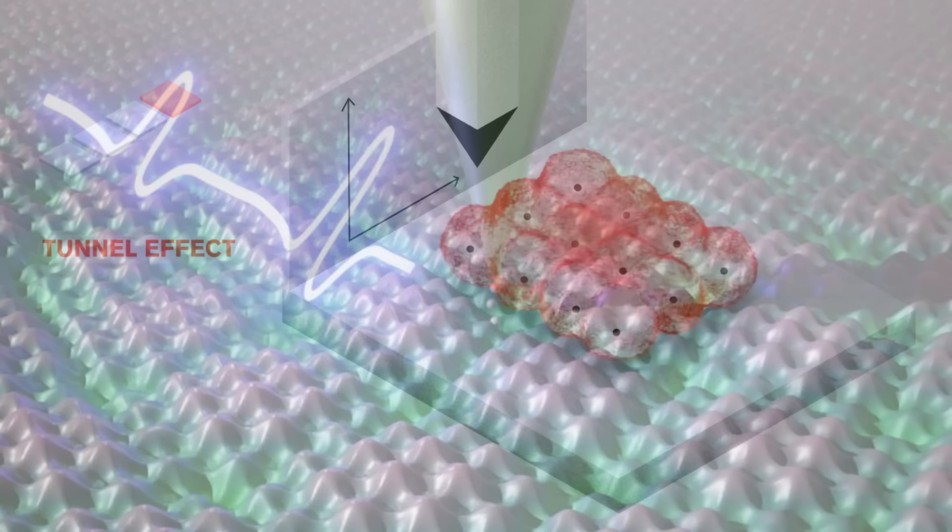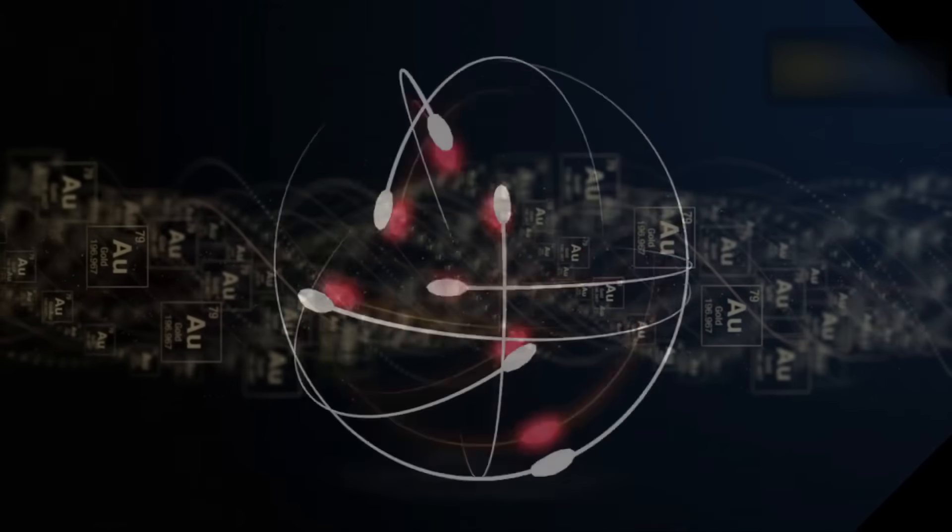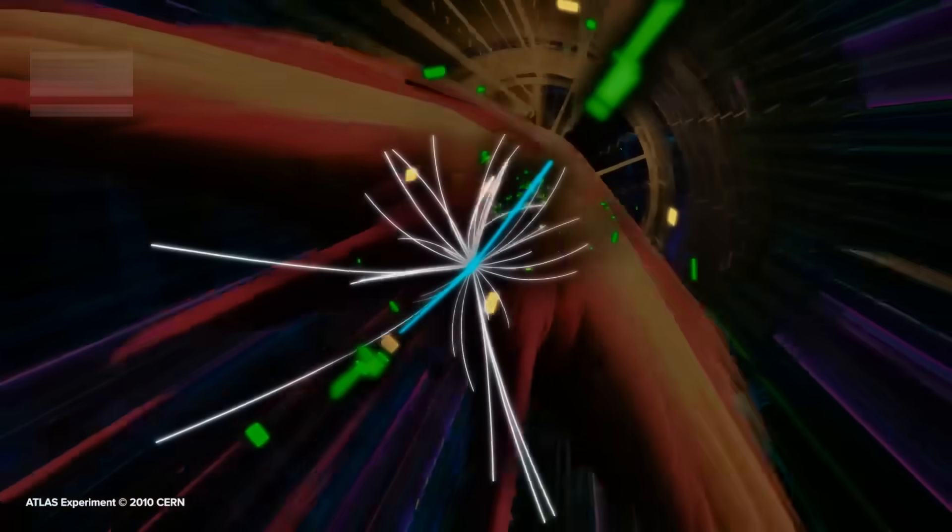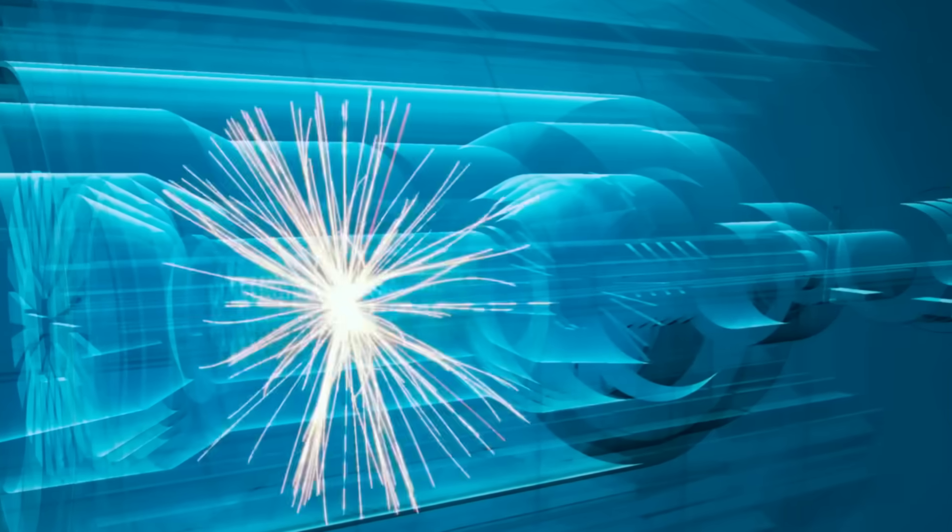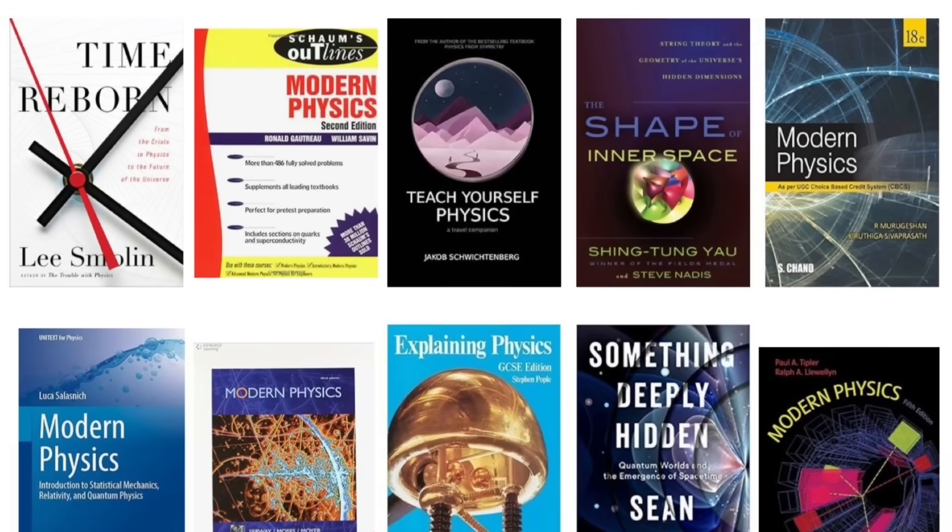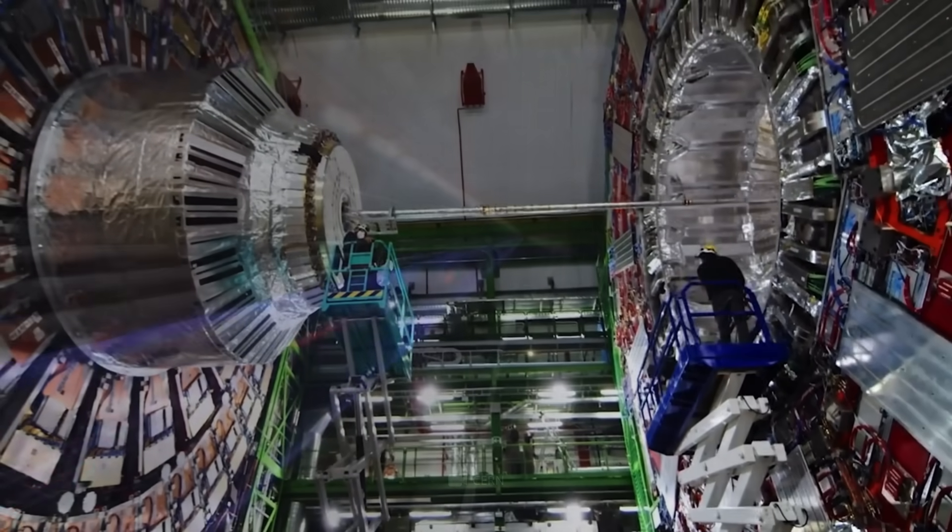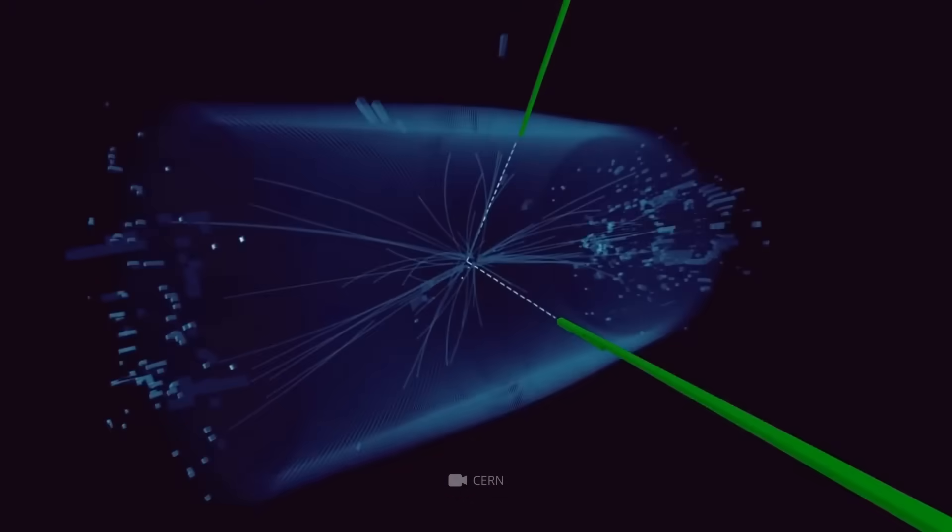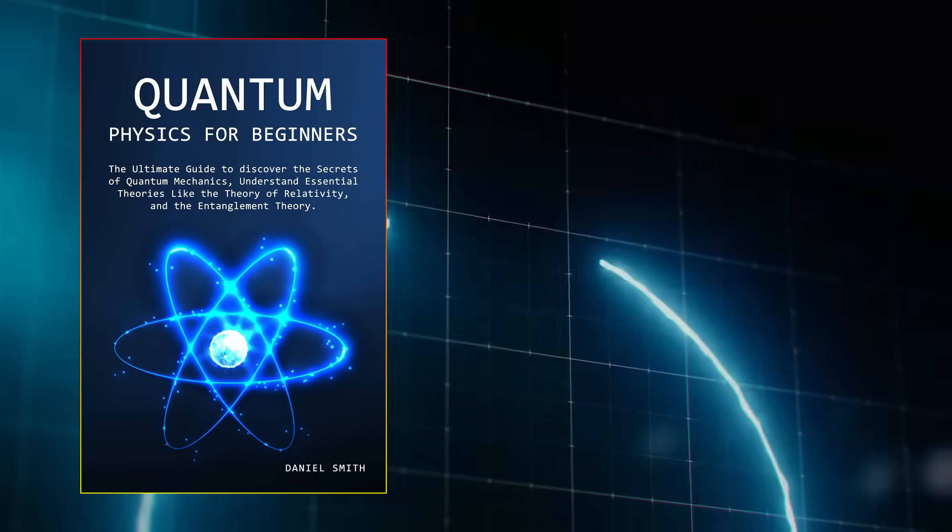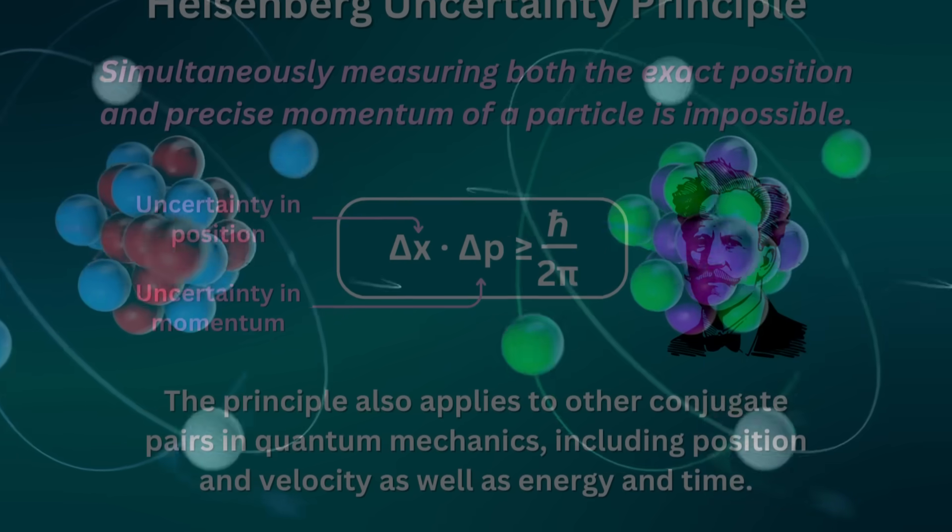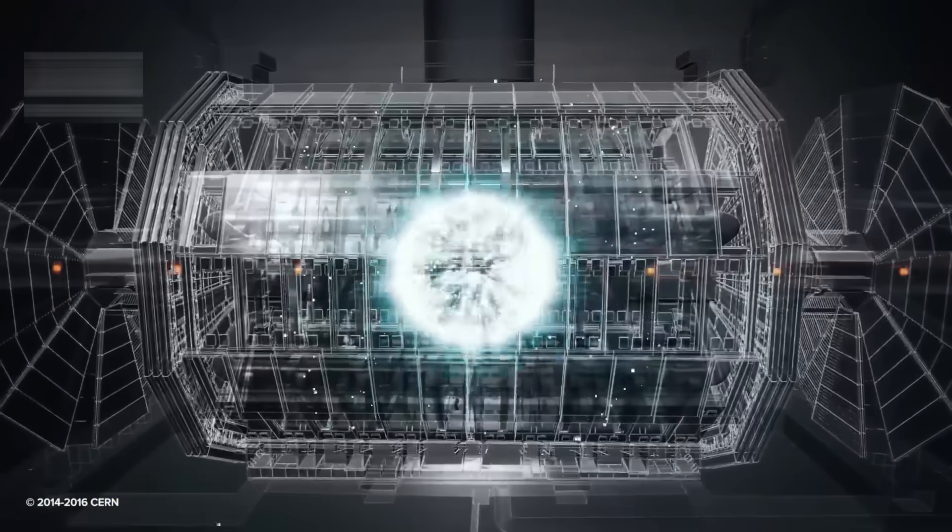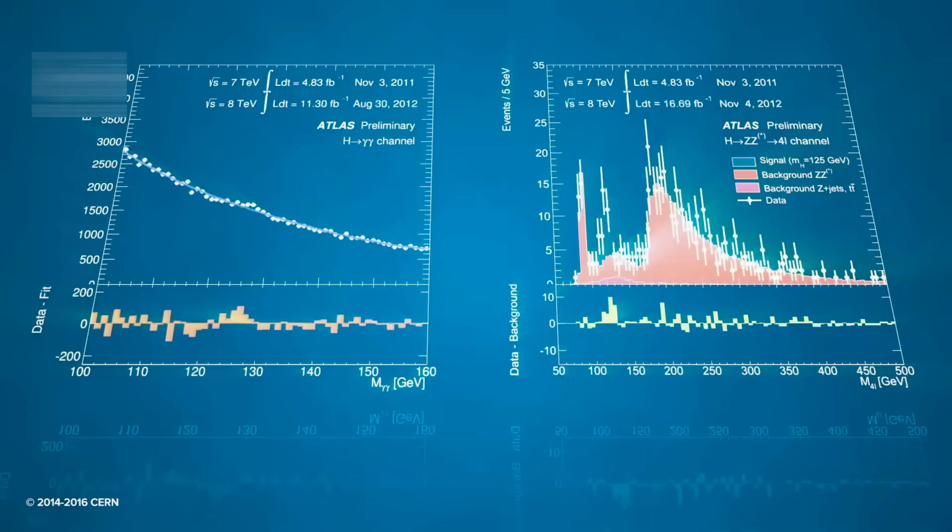CERN's achievement in demonstrating quantum tunneling at unprecedented scales opens new avenues for exploration at the boundary between quantum and classical physics, a mysterious border that has puzzled scientists since the early days of quantum theory. The timeline for further developments is accelerating rapidly. The research team has already announced plans for follow-up experiments that will test tunneling with even larger particles, while theoretical physicists are racing to update their models based on these initial findings. Peer-reviewed papers detailing the complete experimental results are expected to be published in leading journals within the next few months, allowing the broader scientific community to scrutinize the data in detail.